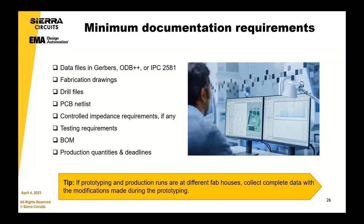Some of the documentation we require: data files — Gerber files, ODB++, IPC 2581, whatever you've got. The more information the better. If you've got netlists, wonderful — fab drawings, schematics, any notes, drill files, any impedance requirements or field solver analysis. If you don't have it, it's not a showstopper, because our online tools are emulated so you can go in and generate your own netlist or field solver equations. We need the BOM, as that helps our supply chain team get a head start on bringing components in or checking any long lead time requirements. Production quantities and deadlines help with scheduling and planning throughout our production facility.